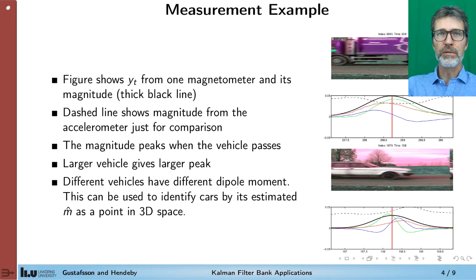So if you put your phone on the road close to a vehicle passing by you get these kind of signals. The red, the green and the blue one. The black one shows the magnitude of these three colored lines and it peaks when the vehicle passes by. For reference we have a dashed line here that is the magnitude from the accelerometer that can also be used for traffic counting but maybe not for tracking the vehicles.